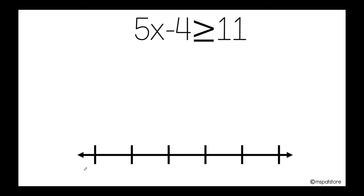So I strongly suggest that when you're solving two-step inequalities, the same way that you're solving two-step equations, you start with the number that is not with the variable — that is not that close to the variable. So in this case, we have negative 4.